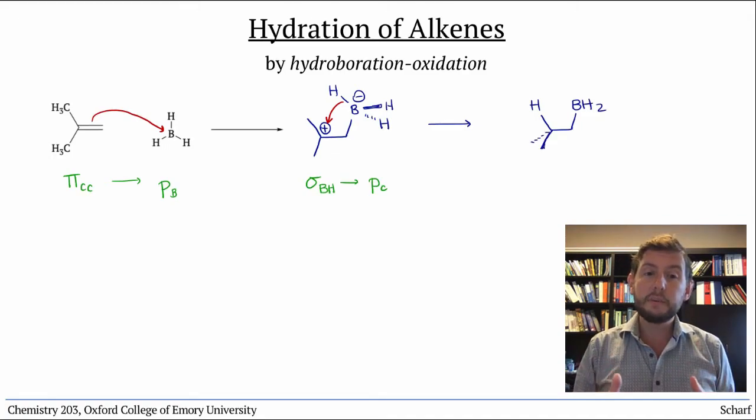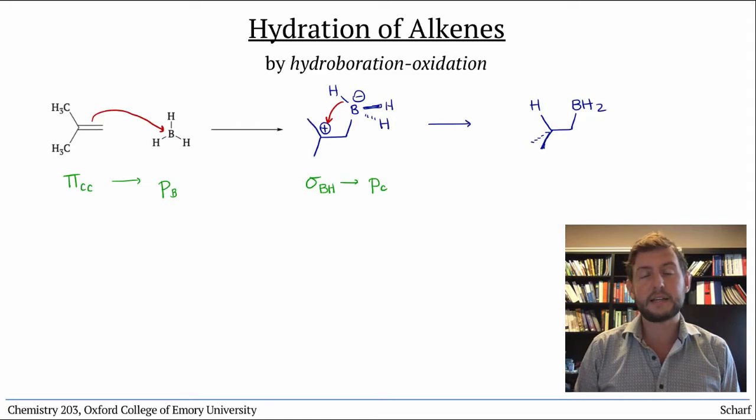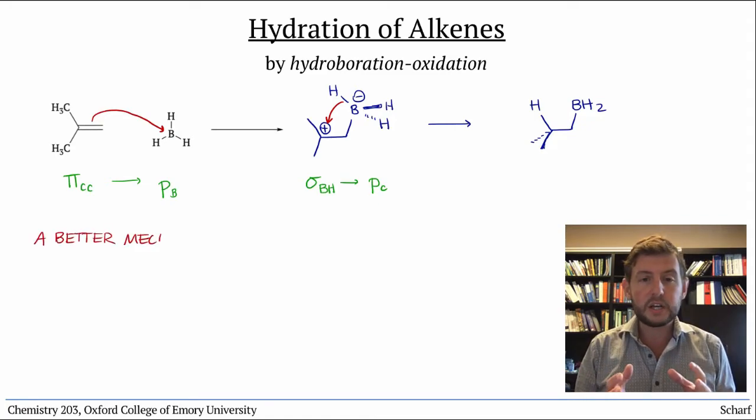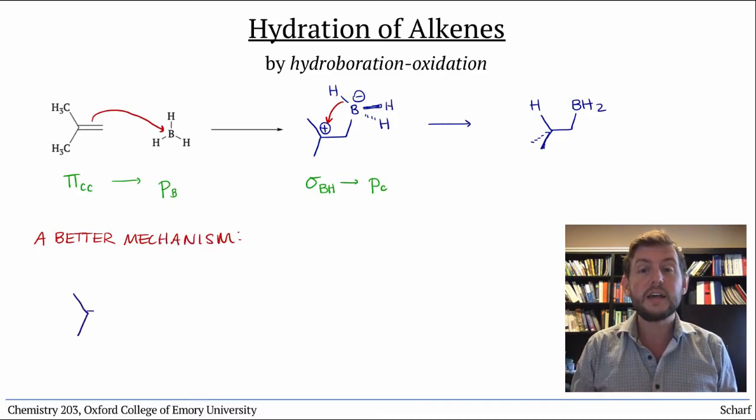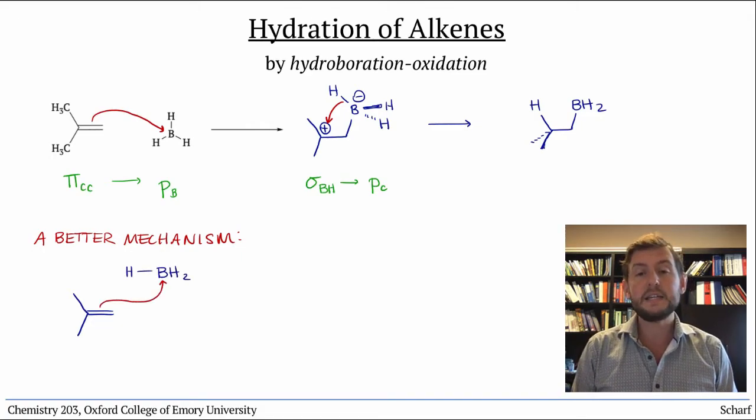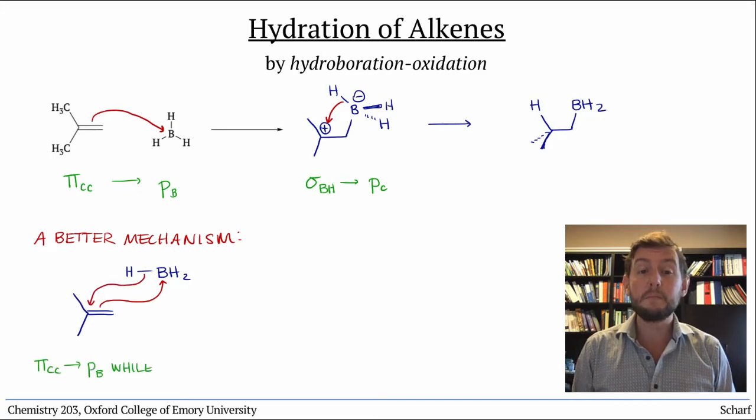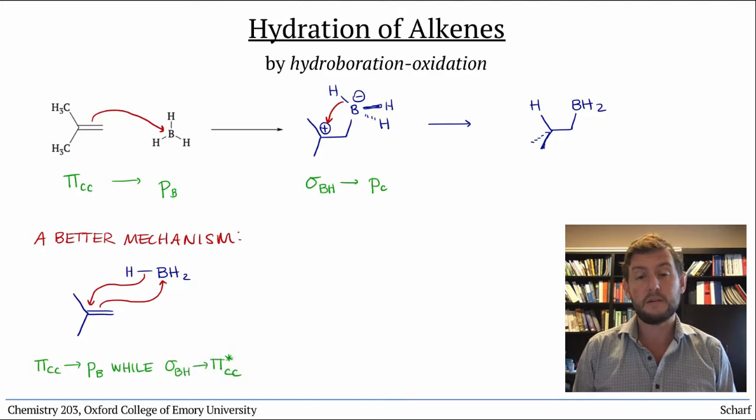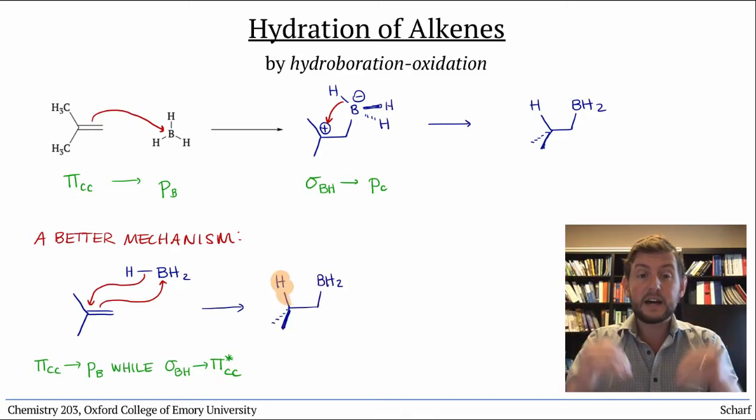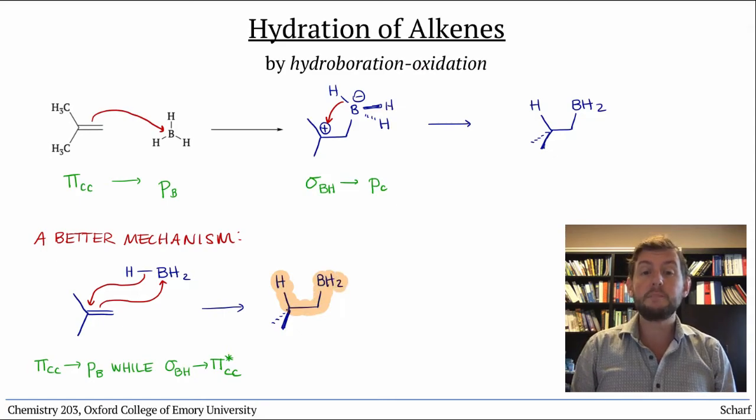There's a good bit of evidence that this reaction doesn't happen exactly like we've drawn. A closer approximation is that the two MO interactions happen simultaneously, like we've seen with lots of other reactions of alkenes. Pi CC donates into the empty P orbital on boron, while sigma BH donates into pi star CC. The result is that the hydrogen and the boron add syn to the alkene, that is they both end up on the same side.